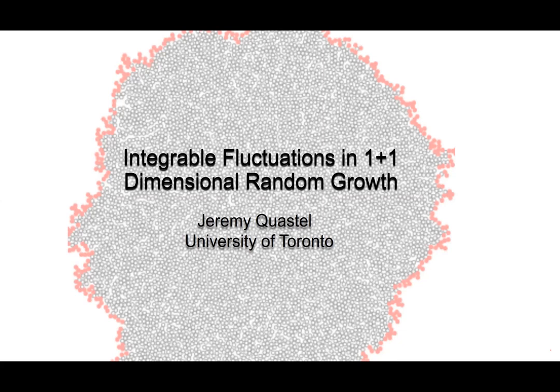The model you see in front of you is an off-lattice Eden model — you've got a cluster growing, particles which are neighbor to the cluster are joining it at rate one. The pink ones are the ones that just joined, and you can think of this as a model of something like a bacterial colony, a tumor, or perhaps people who are not social distancing.